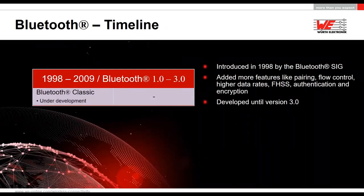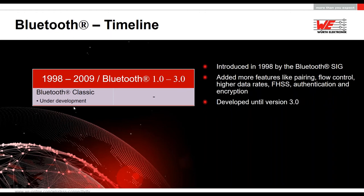Bluetooth was invented in 1998 by the Bluetooth Special Interest Group. It first consisted of the Bluetooth Classic standard. Development continued until Bluetooth version 3.0, during which many features were added that you most probably know: pairing, frequency hopping techniques, authentication, and also encryption.